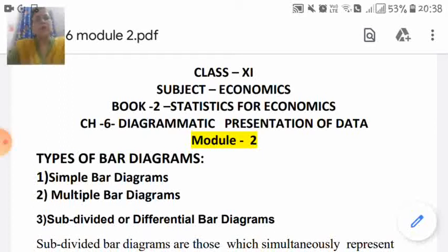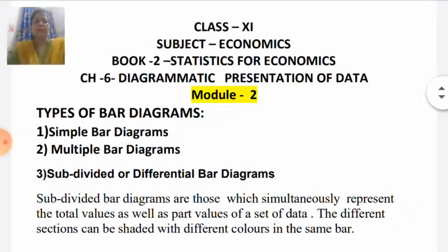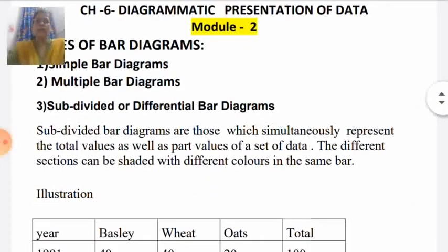Now in this module we will study about the third type of bar diagram, that is subdivided or differential bar diagrams. Subdivided or differential bar diagrams are also called component bar diagrams, because in this we present our data in parts — in components — within a bar. We present our data simultaneously in different parts as well as the total values of the set of data.